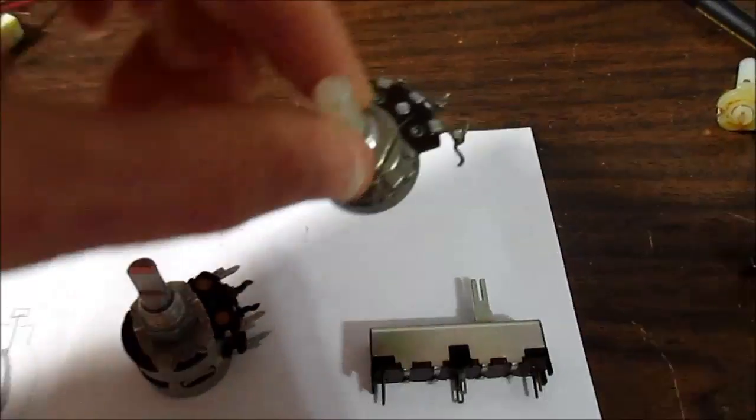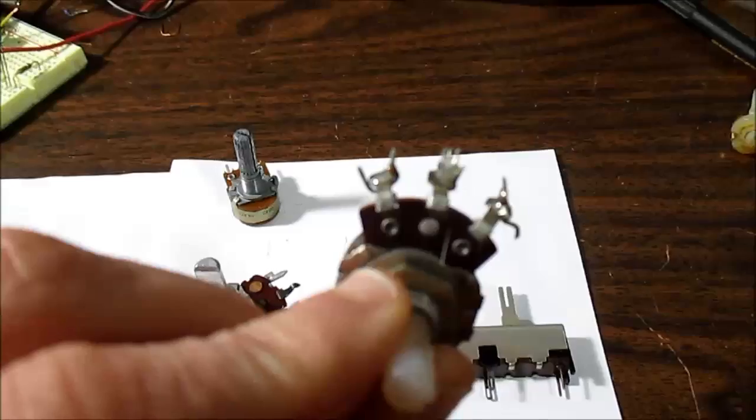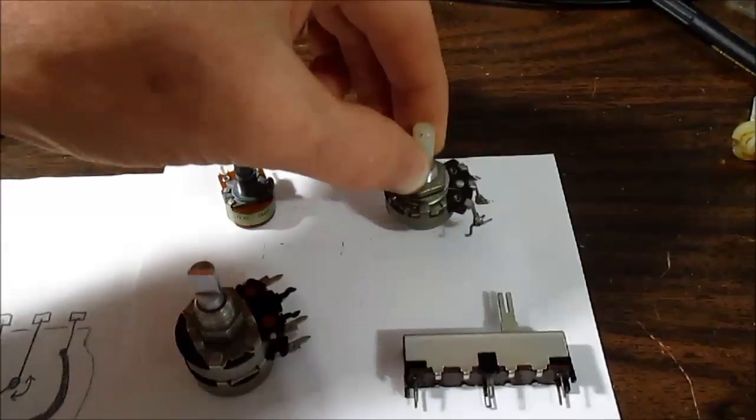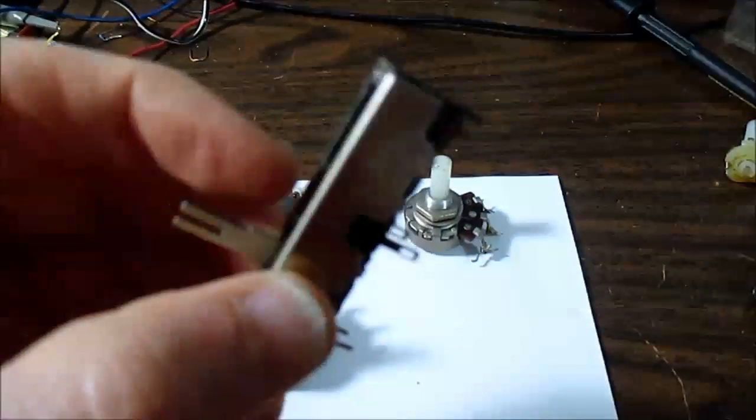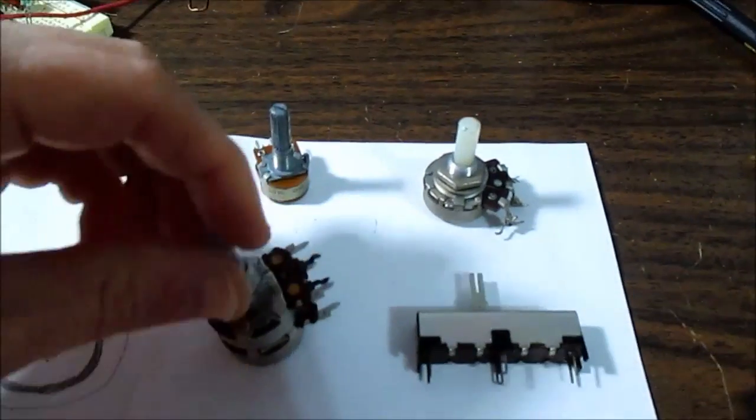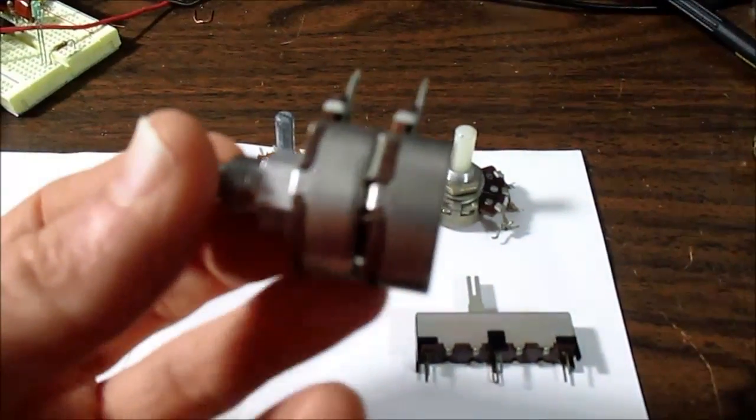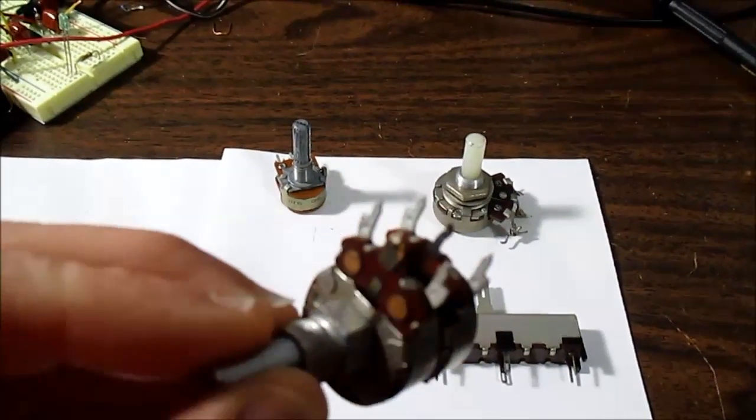Here's a standard single one with three lugs. This is a linear motion one - it has six connections because there's actually two pots inside of this one unit. Same with this one, there are two stacked together. You can see there's six lugs total.